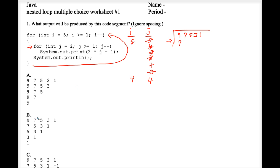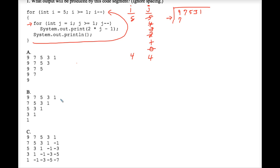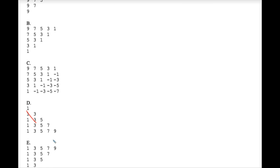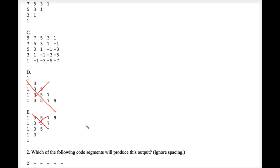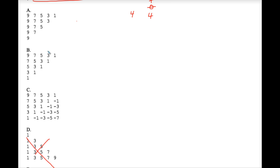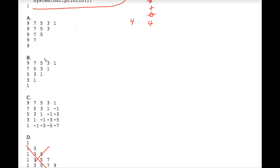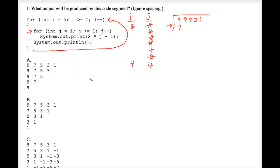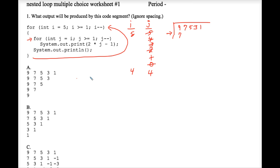Let's pause here to see if we can rule out any answers. So far A and B are still fair game, and so is C. D is ruled out, and E is ruled out. At this point on the AP exam you might want to guess — at least you have a one-third chance of getting it right. But for the exercise in this video, let's proceed.